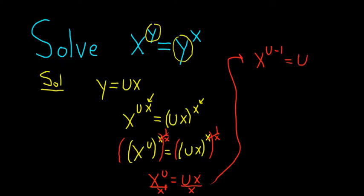All right, almost there. Now we can solve for x. We can raise both sides to the 1 over u minus 1. So this is 1 over u minus 1. 1 over u minus 1. This is equal to x equals u to the 1 over u minus 1.